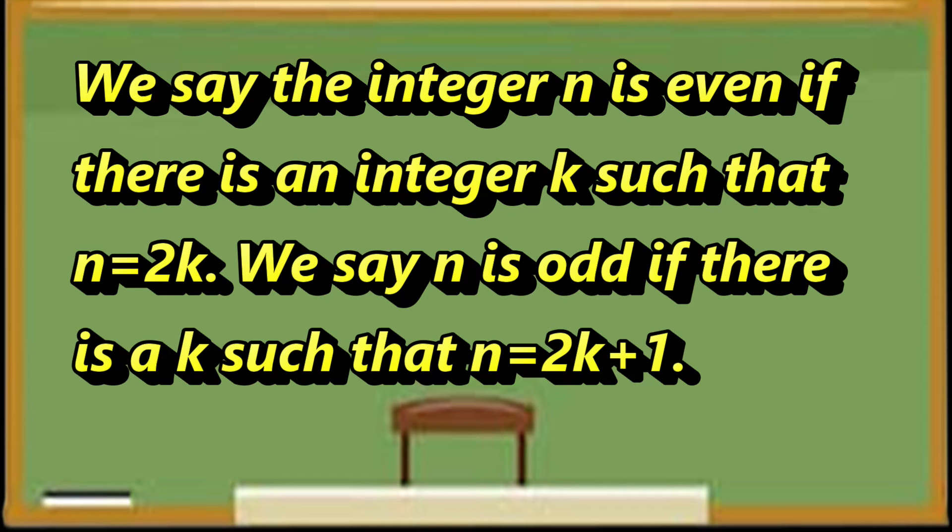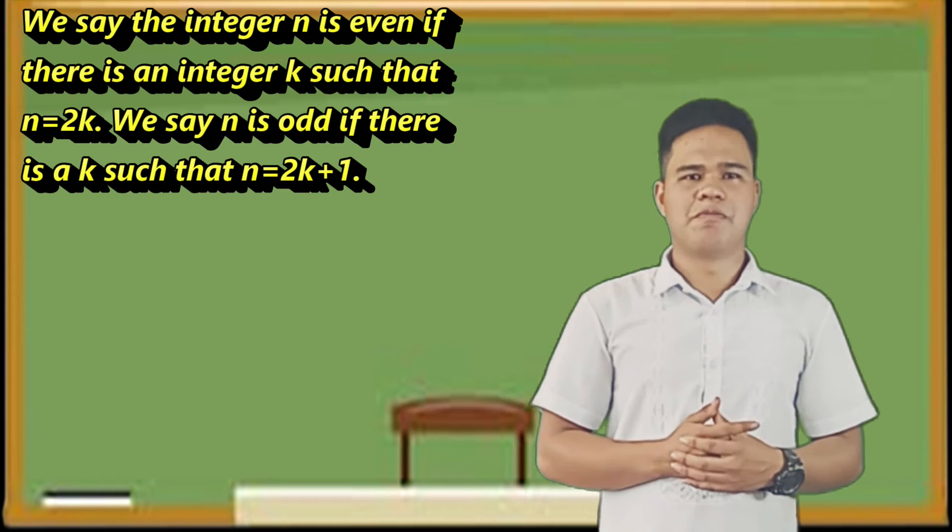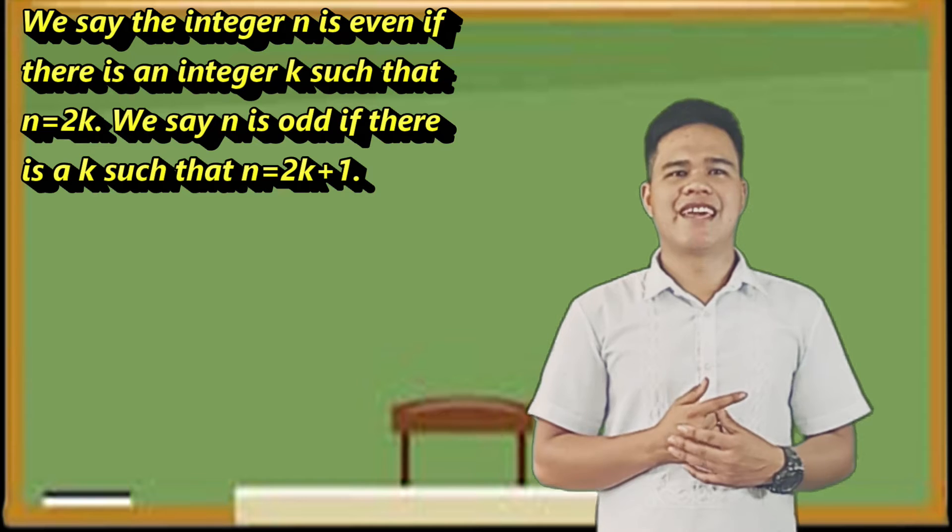Example: we say the integer N is even if there is an integer K such that N equals 2K. To understand this example, let's represent K with integers.